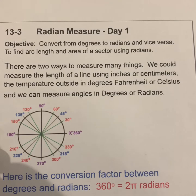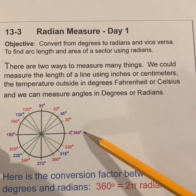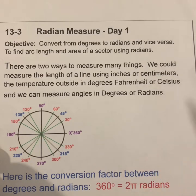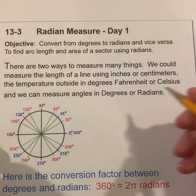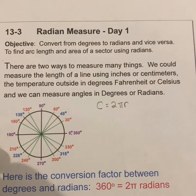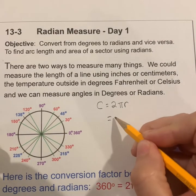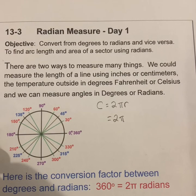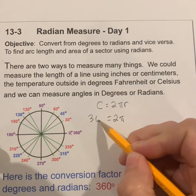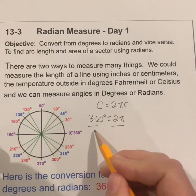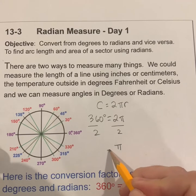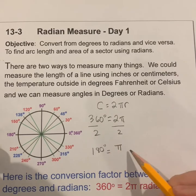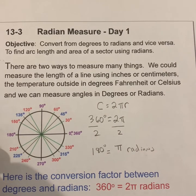There are two ways to measure many things. We can measure the length of a line using inches or centimeters, the temperature outside in degrees Fahrenheit or Celsius, and we can measure angles in degrees or radians. The unit circle is made up of 360 degrees — that is degree measure. However, there's something called radian measure, and where it comes from is the circumference. The circumference formula is 2πr. If I have a unit circle where r is 1, then the circumference is 2π. But the circle is 360 degrees. So if I divide both sides by 2, I get that π equals 180. So π radians is equal to 180 degrees.